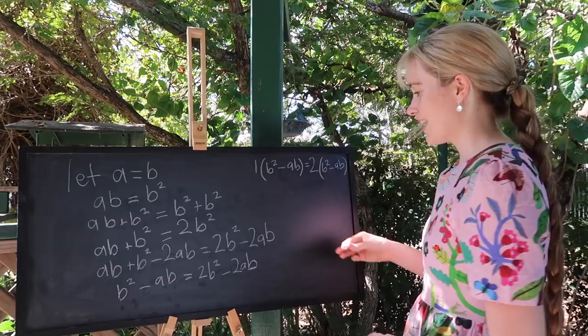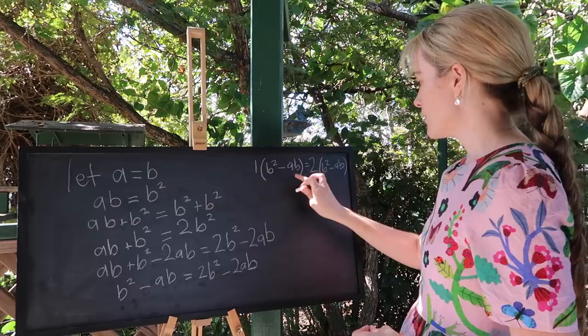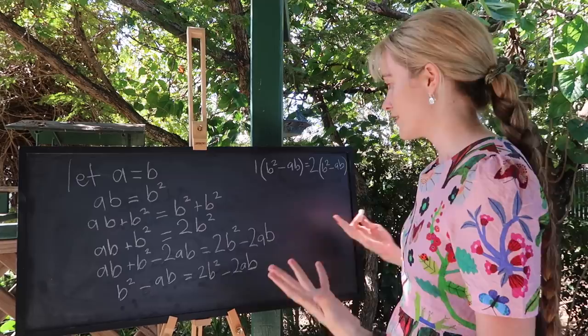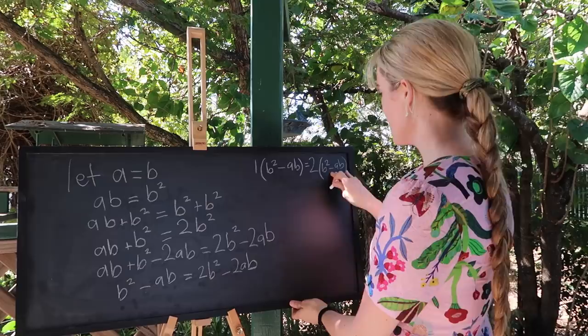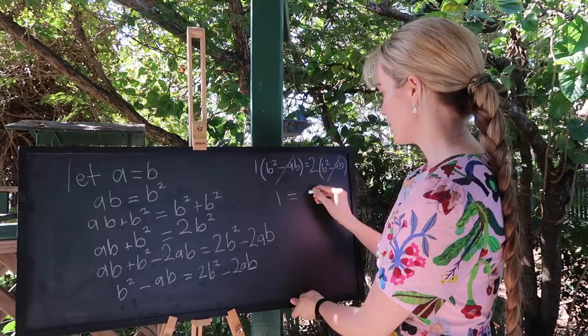Okay so now we've got this line still nothing illegal has happened. You want to check my algebra you can go through there but now we have something. Alright we have B squared minus AB on both sides of the equation. What we may want to do is to recognize that if we divide both sides by the same thing that's all right. Like we can divide both sides by B squared minus AB and that would be the same as cancelling out this term. If we'd cancelled out this term in brackets then what we have left with is that 1 is equal to 2.